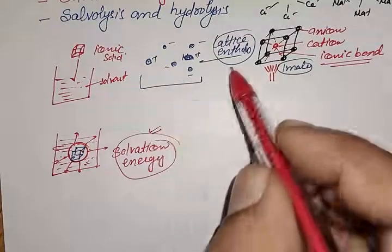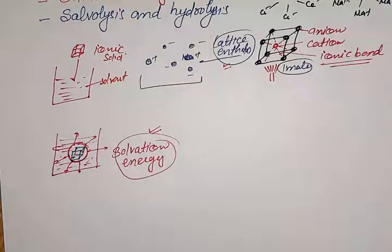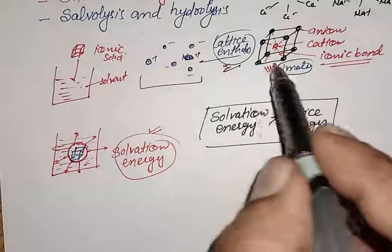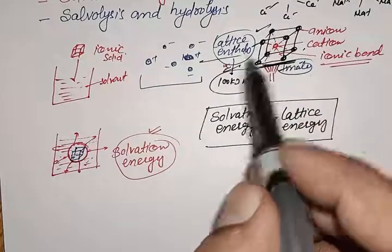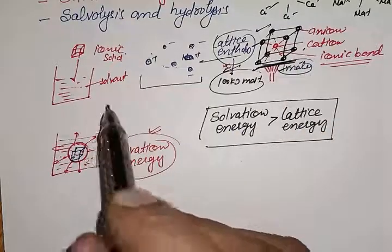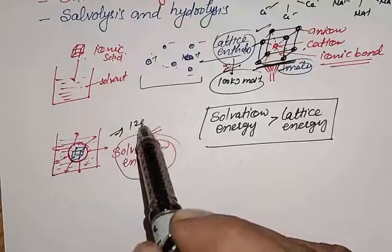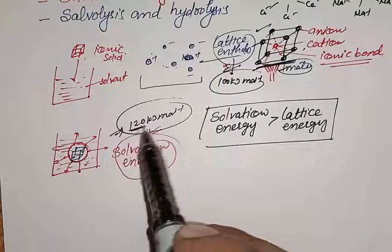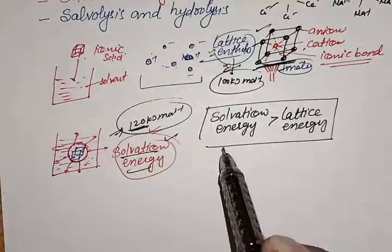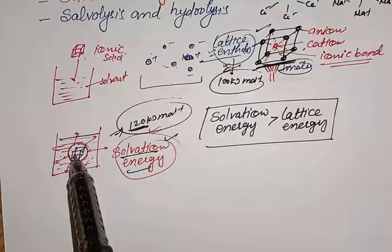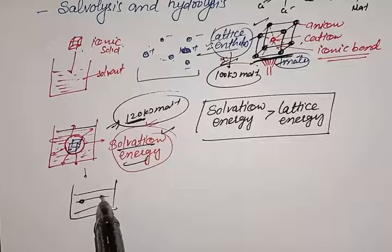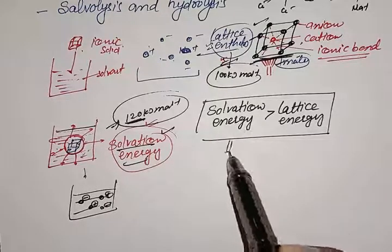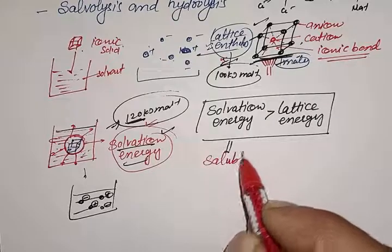If the solvation energy is greater than the lattice energy — for example, if we require 100 kJ/mol to break the lattice and the solvation energy released is 120 kJ/mol — then the solvation energy is more than the lattice energy. In this case, when we add the ionic solid into the solvent, the lattice will break, and the positive and negative ions will become separate. So the ionic compound will be soluble in that solvent.